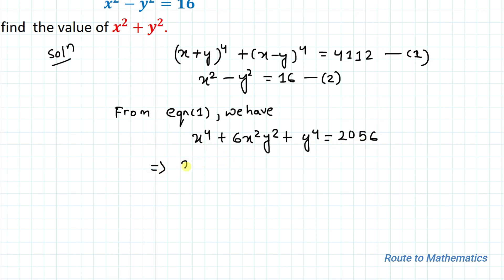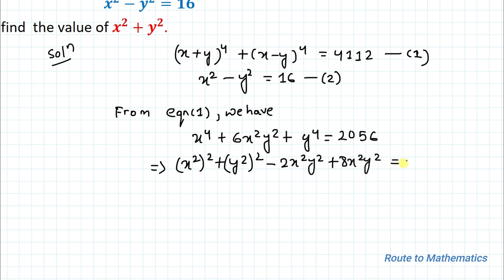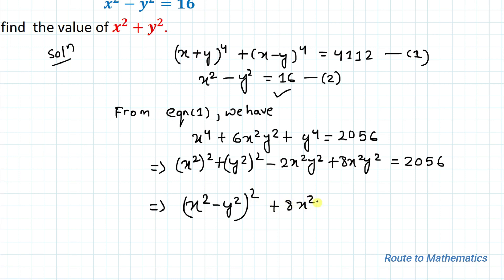In the next step, we write x⁴ + 6x²y² + y⁴ as (x²)² + (y²)² − 2x²y² + 8x²y², which equals (x²−y²)² + 8x²y² = 2056. Here we apply the algebraic identity using x²−y², whose value is given in equation 2.